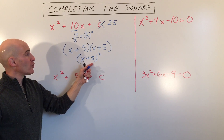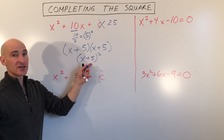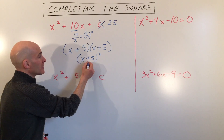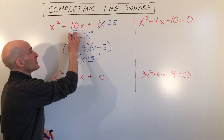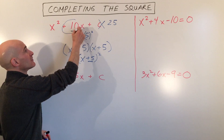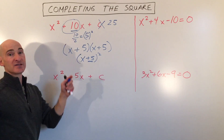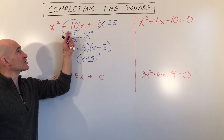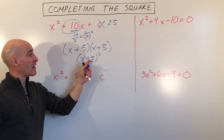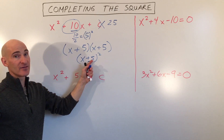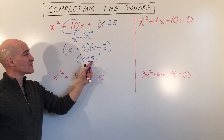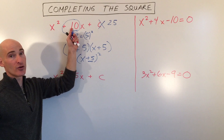What you're going to notice when you do this factoring is that this number is always going to be half of this middle coefficient. So if this was a minus 10x, this would be minus 5. This will always be half of this middle coefficient.